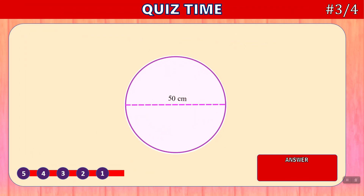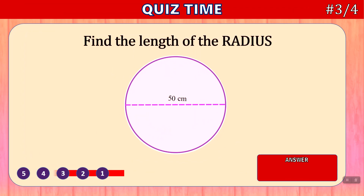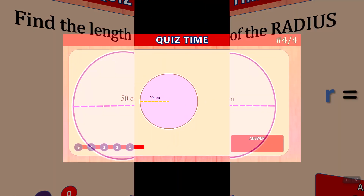Number 3 — find the length of the radius. Time's up. The answer is 25 centimeters. We can see that the diameter is 50, so R is equal to 50 divided by 2, which is 25.